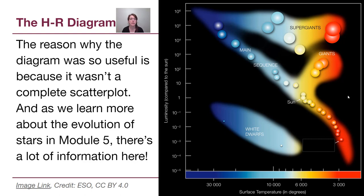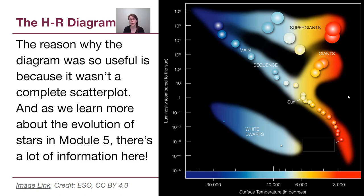One of the biggest reasons why this is such a useful diagram is because it's not a complete scatter plot — stars don't show up just anywhere they want to. What we will learn more about in Module 5 is what we see here indicated as the main sequence, running from the upper left down to the bottom right. The main sequence describes where stars show up in this diagram for 90% of their lifetimes. As stars begin to die, they will turn into giants and supergiants, and eventually stars like our Sun will leave behind white dwarfs.